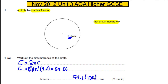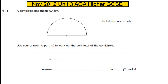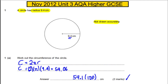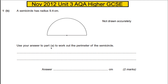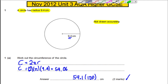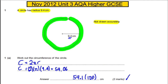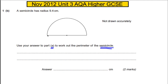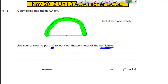State it as 59.1 cm and you're done for those two straightforward marks. For part b, a semicircle has the same radius of 9.4, so using your answer to part a, the whole circumference was 59.1, meaning the curved arc distance must be half of that.